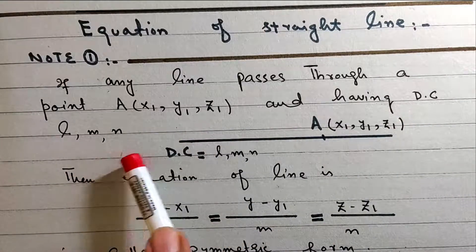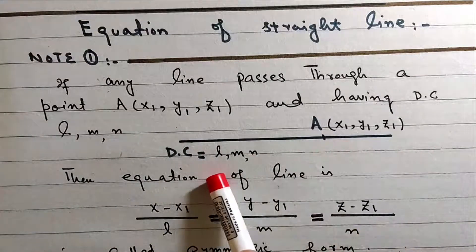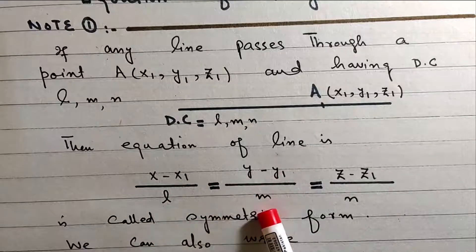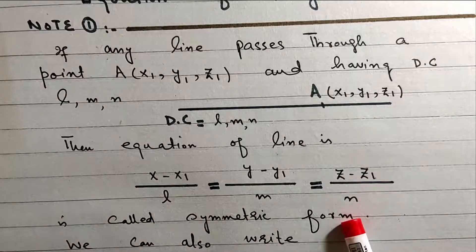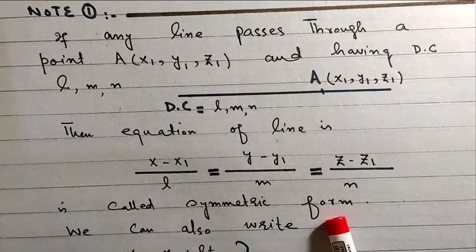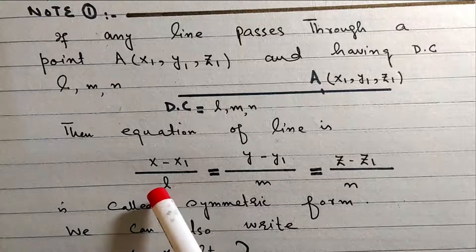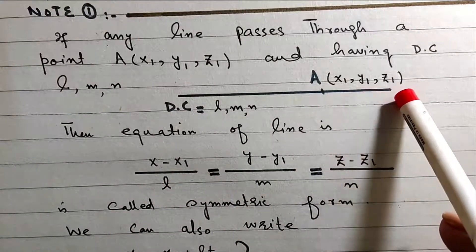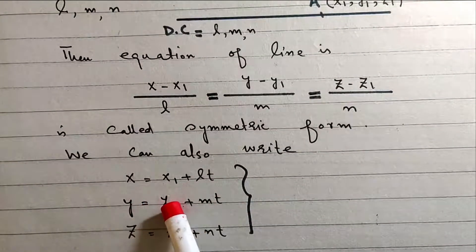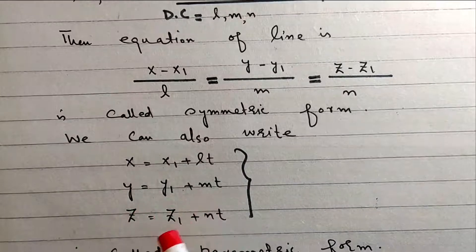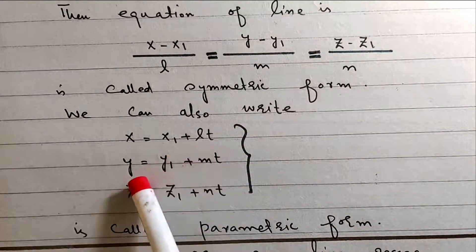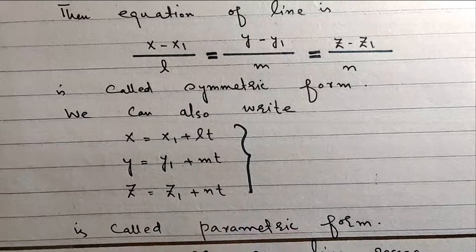If we have a line passing through point (x1, y1, z1) with direction cosines L, M, N, then the equation of the line in symmetric form is: (x − x1)/L = (y − y1)/M = (z − z1)/N. This is called the symmetric form. It can also be written as: x = x1 + Lt, y = y1 + Mt, z = z1 + Nt, which is called the parametric form.